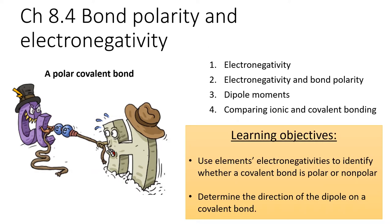A covalent bond involves elements sharing electrons, but no one said they had to share electrons fairly. In this lesson, we will quantify the greediness of each element and see how that affects the electron distribution in the covalent bond. When one element is much greedier than the other, they form a polar covalent bond.